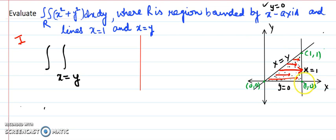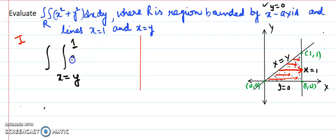Every time in this region the end is at this line, and reading the x value from there gives x equals 1. So x equals 1 is the upper limit, and the function to be evaluated is x squared plus y squared.